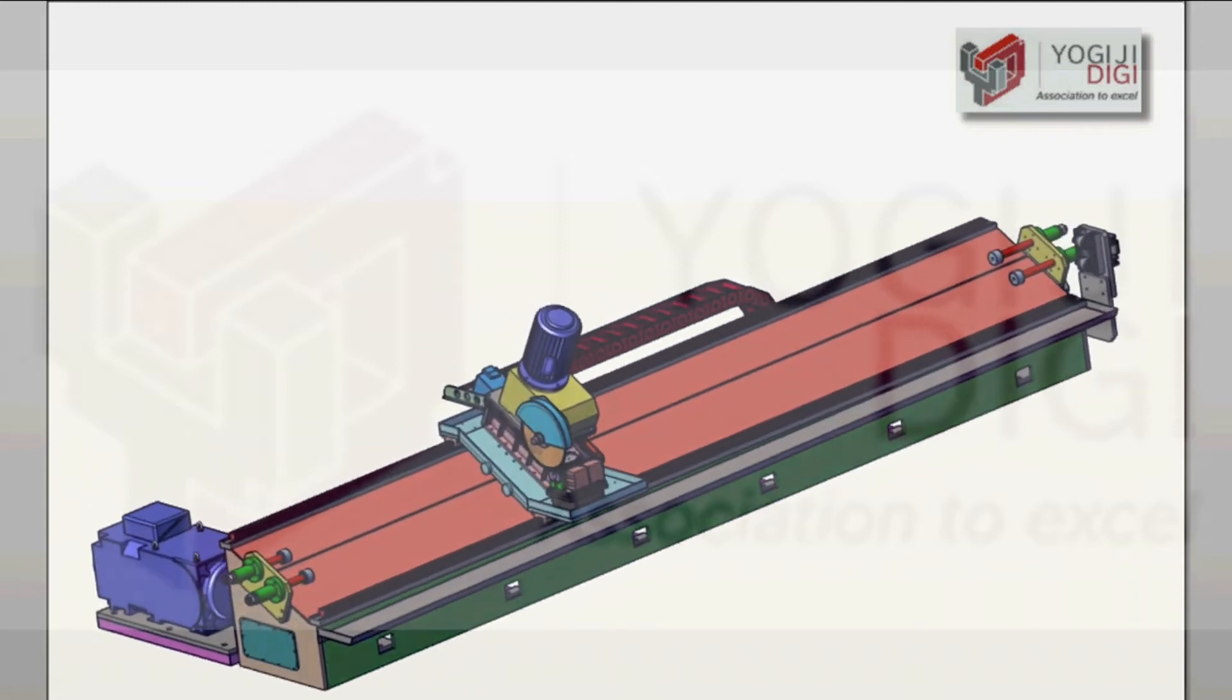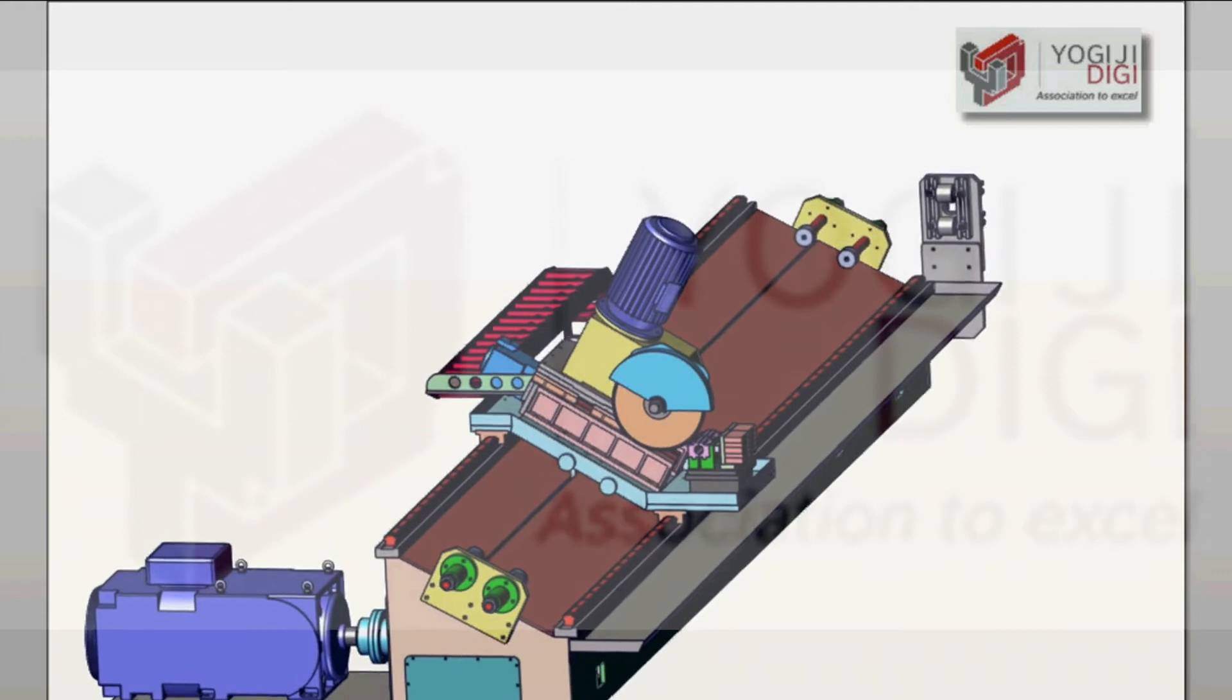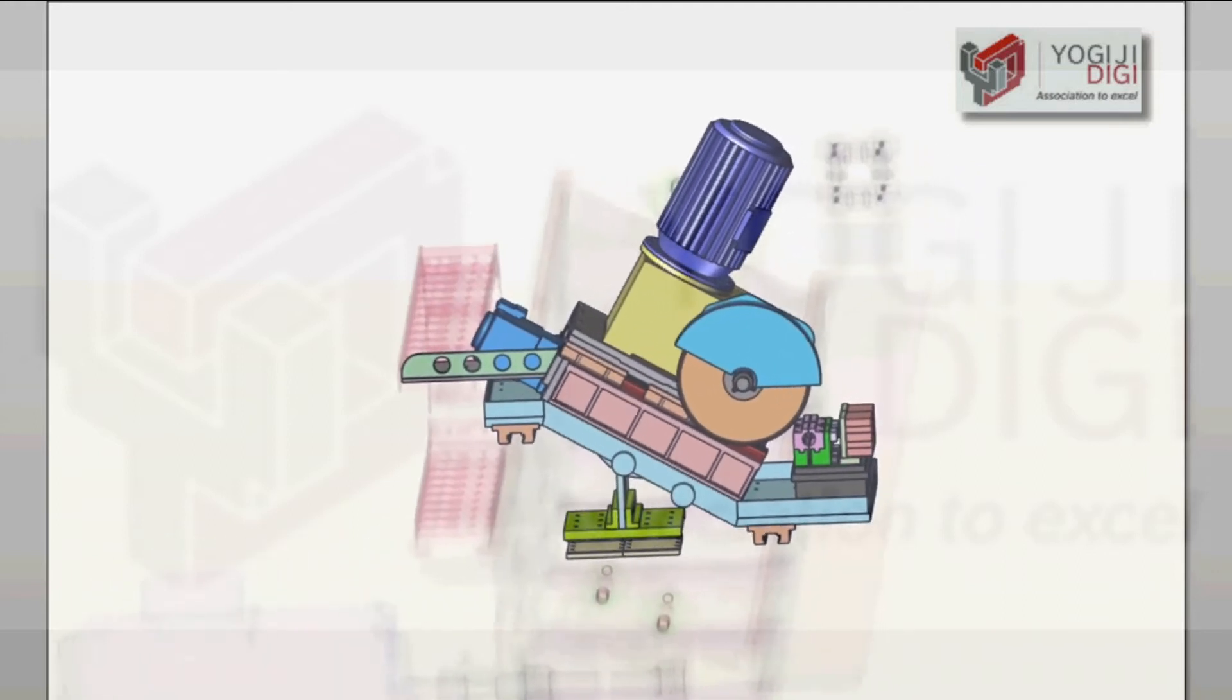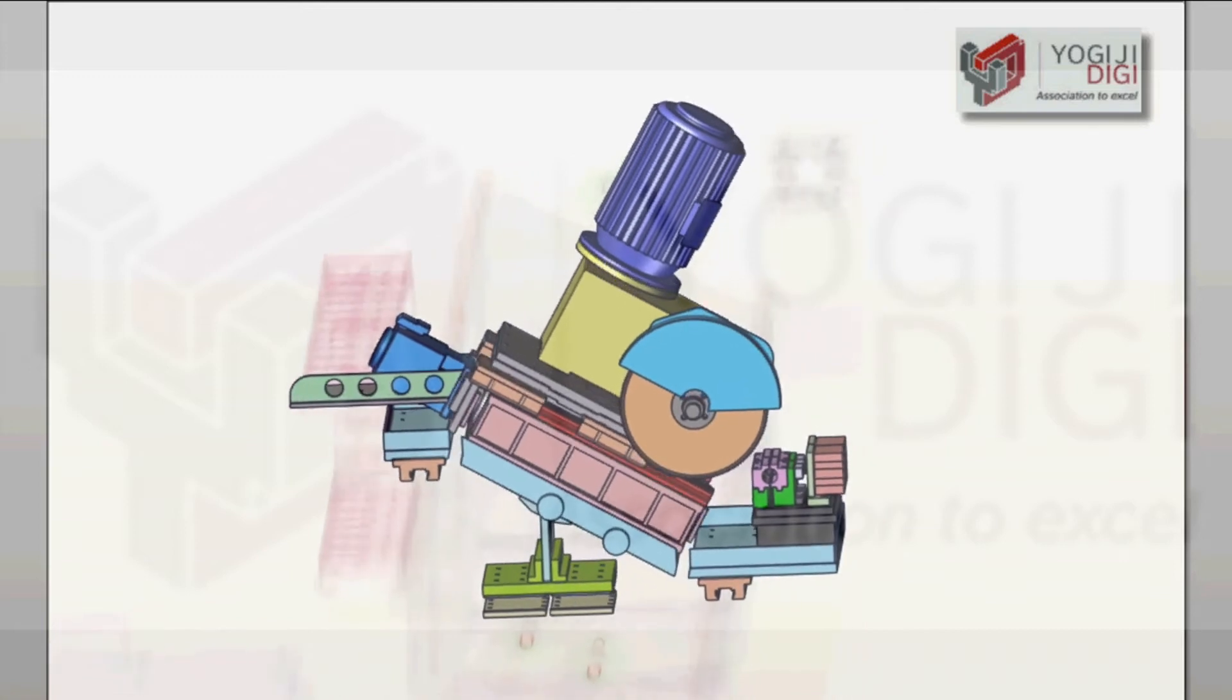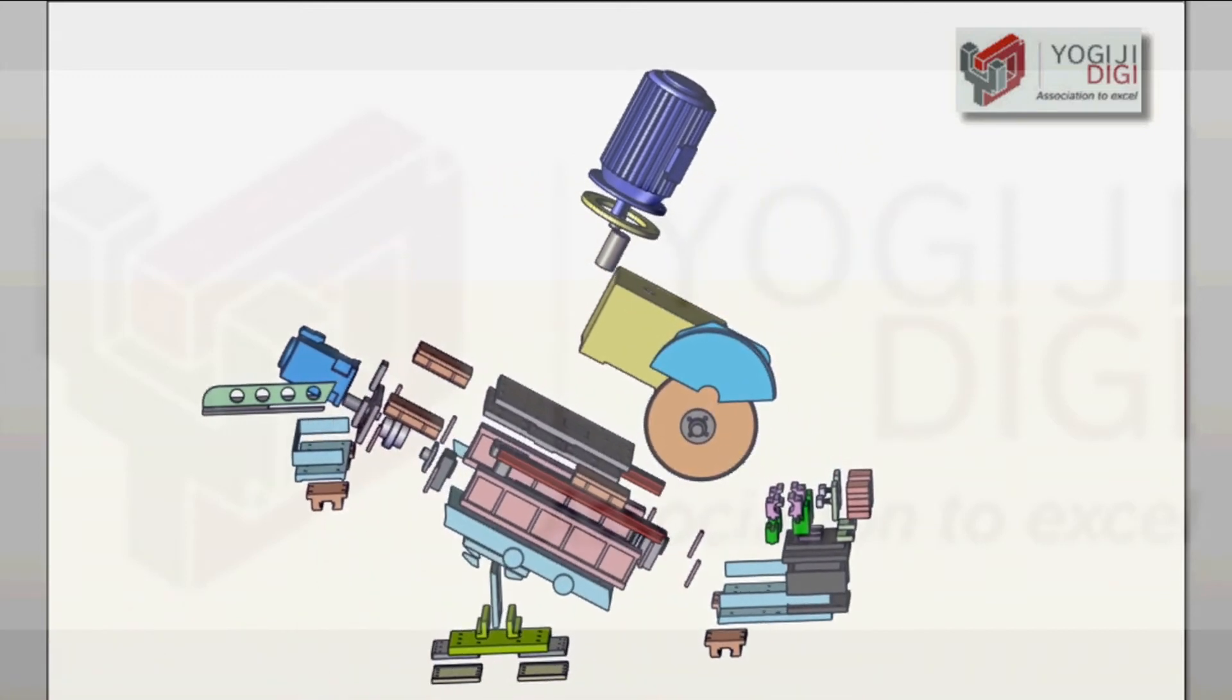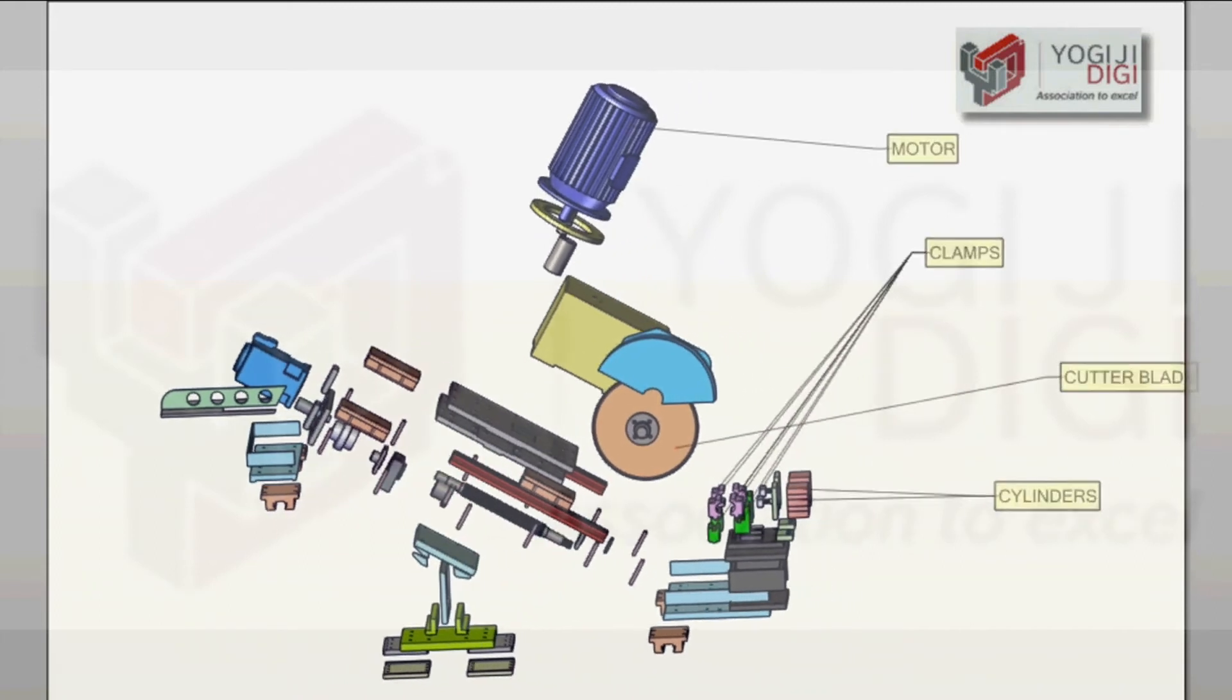The cutter motor is mounted above the gearbox for smoother, backless cutting at variable speeds. The servo feed motor, coupled with the ball screw mechanism, not only ensures smooth translation but also increases cutter life and gives the trolley a maintenance-free life.